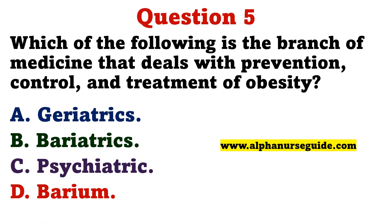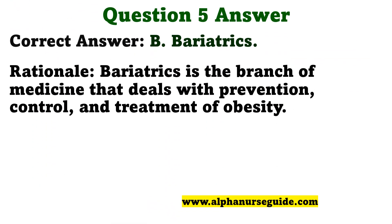Which of the following is the branch of medicine that deals with prevention, control, and treatment of obesity? A: Geriatrics. B: Bariatrics. C: Psychiatric. D: Barium. The correct answer is B, Bariatrics. Bariatrics is the branch of medicine that deals with prevention, control, and treatment of obesity.